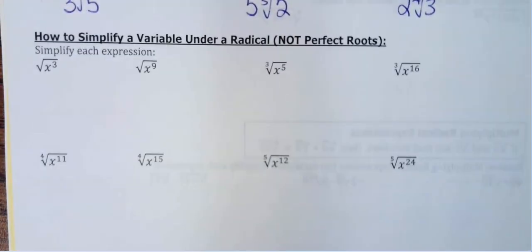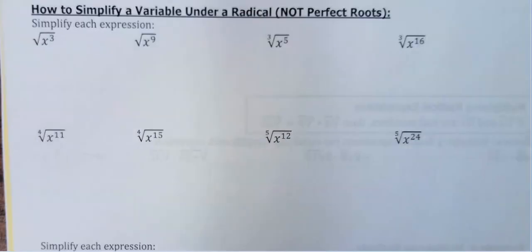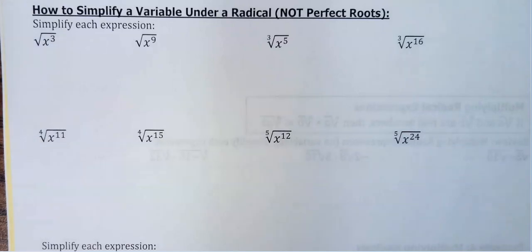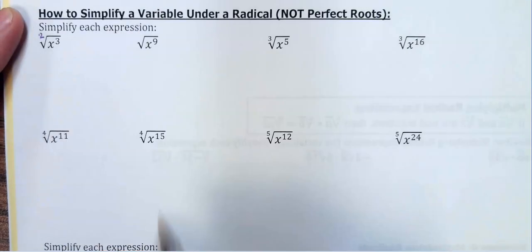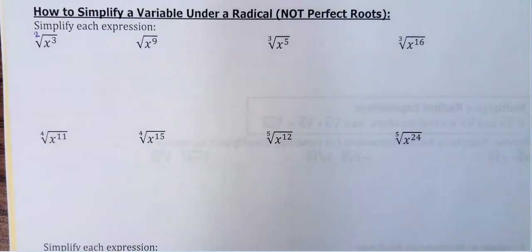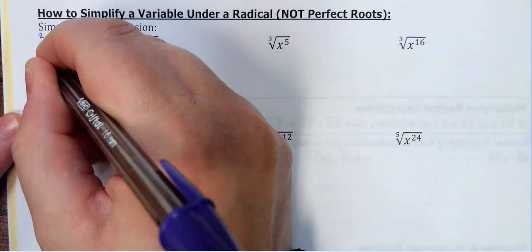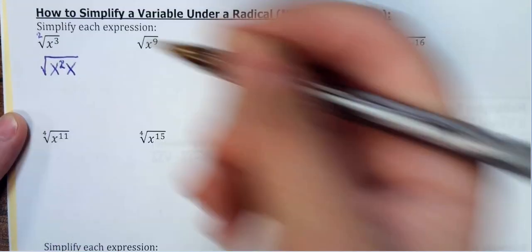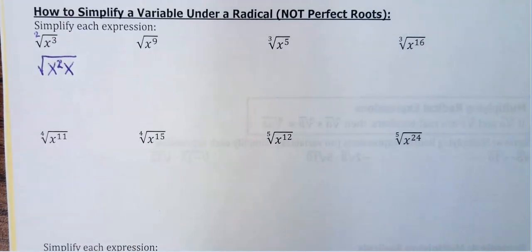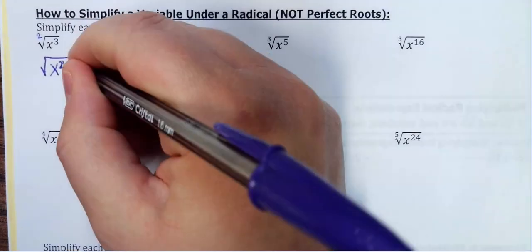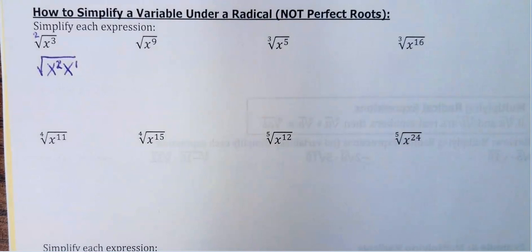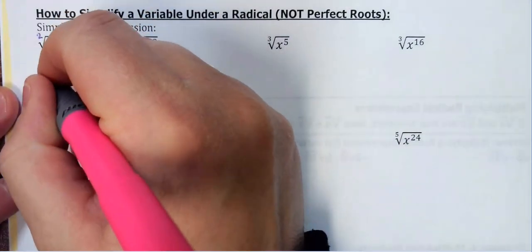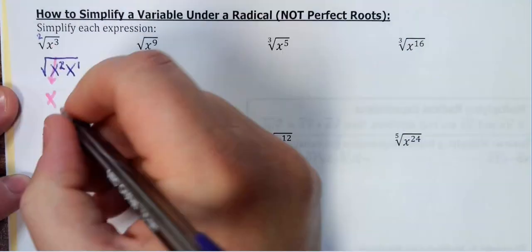Now we're going to work with variables. If the exponent is divisible by the root, it's going to be a perfect square — or cube, or whatever you're working with. If it's not, you'll have to manipulate a little bit. For a square root, the index isn't written — I need my exponent to be divisible by 2 to pull out any perfect squares. For x³, 3 is not divisible by 2, so I rewrite it as x²·x. Anything with an even exponent is a perfect square under a square root, so x² comes out as x, leaving x underneath.